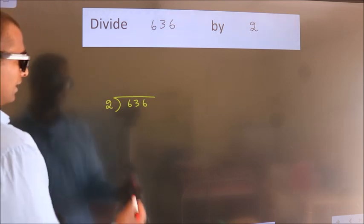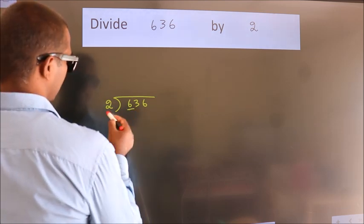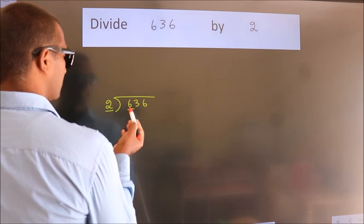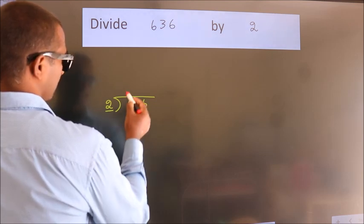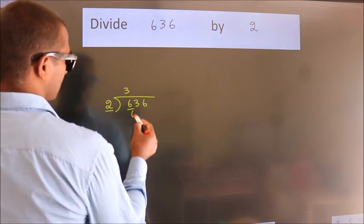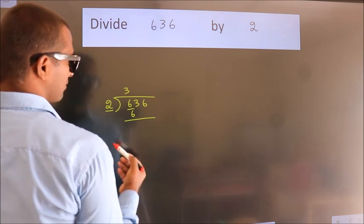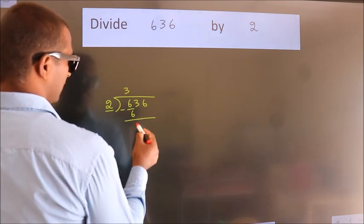Next, here we have 6, here 2. When do we get 6? In 2 table, 2 threes, 6. Now we should subtract. We get 0.